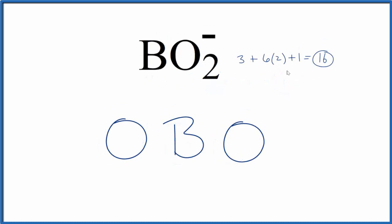We have 16 valence electrons for the BO2 minus Lewis structure. We're going to put a pair of electrons between the atoms. That forms the chemical bond. We've used four of our 16.